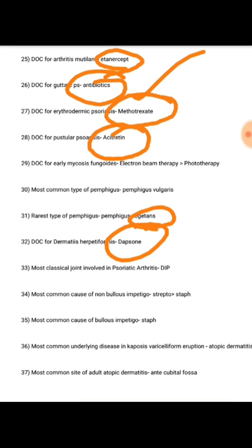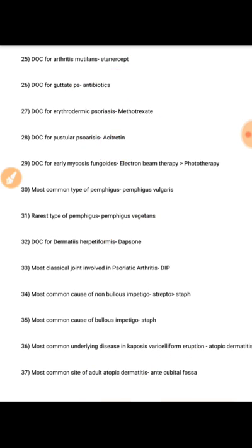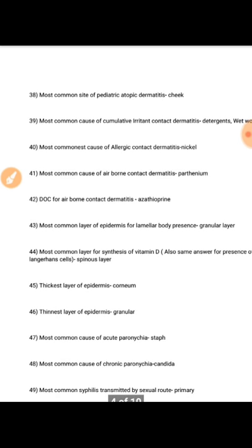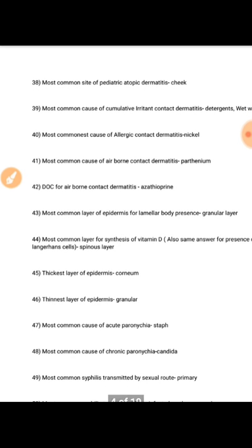Most common underlying disease in Kaposi varicelliform eruption is atopic dermatitis. Most common site of adult atopic dermatitis is antecubital fossa; in case of pediatric atopic dermatitis it is the cheek.